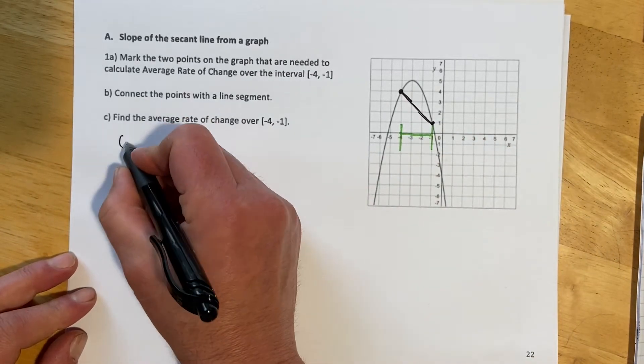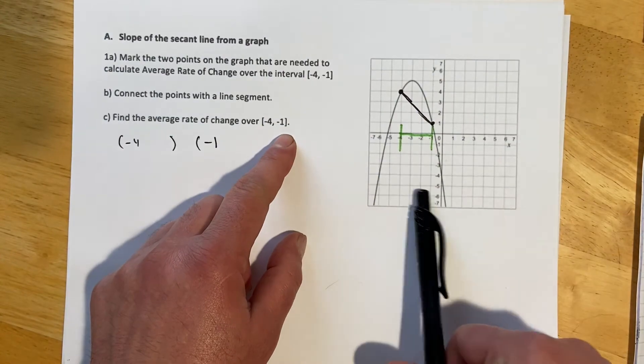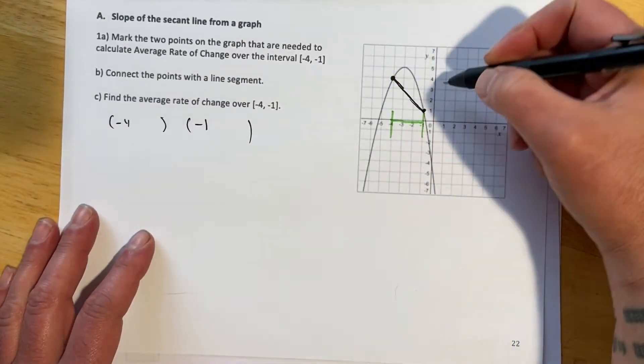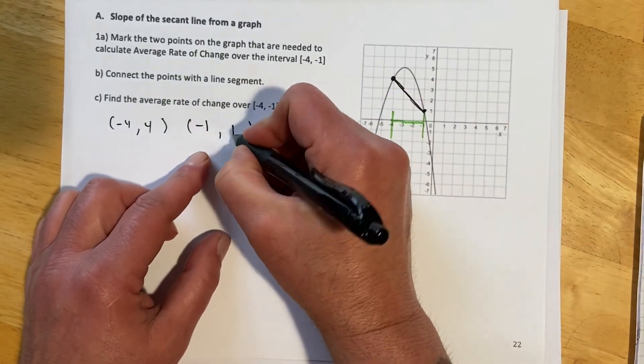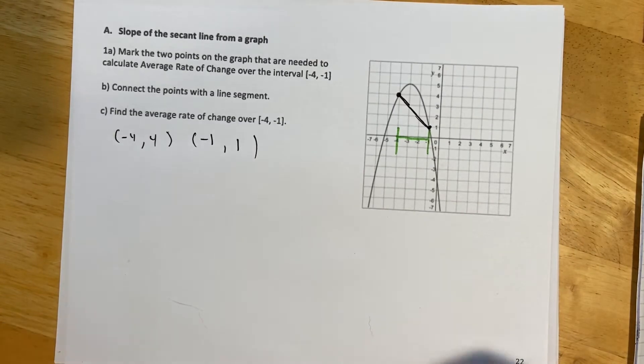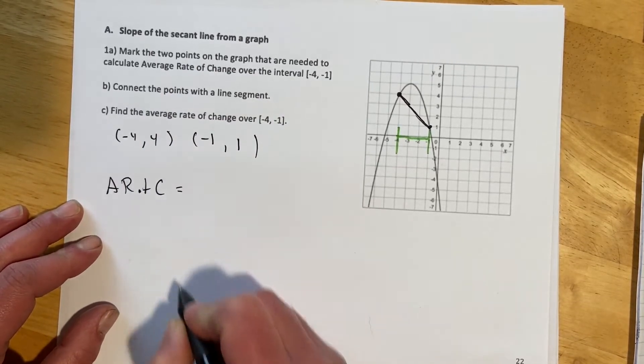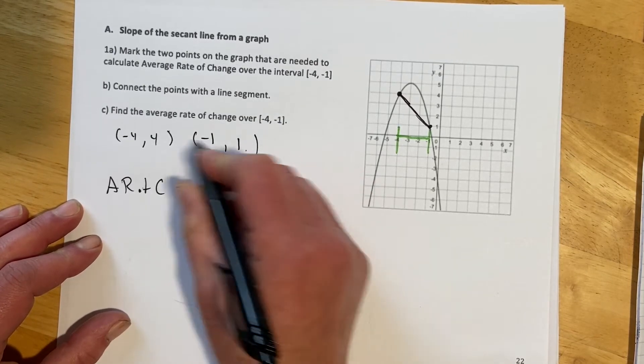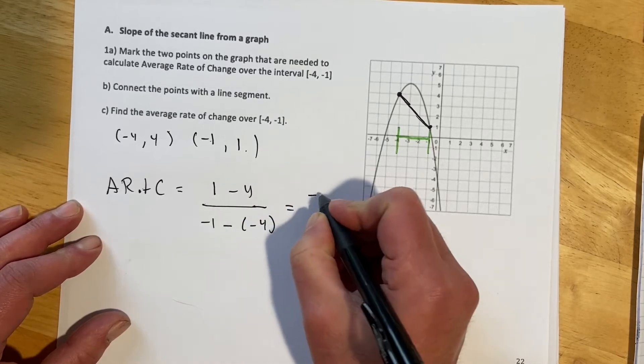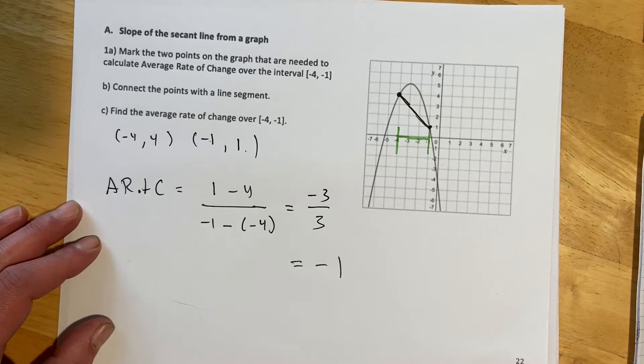I'm going to write out the ordered pair because I tend to screw it up less if I do that. But notice this negative 4, negative 1 is not on the graph. Negative 4 to negative 1 is this interval on which we're looking. So the points that actually go with that would be when x is negative 4, y is 4. And when x is negative 1, y is 1. So average rate of change, we're basically just finding the slope of this line. So I'm doing our y2 minus y1. So it would be 1 minus 4 and then negative 1 minus negative 4. That makes negative 3 over 3. And my average rate of change is negative 1.